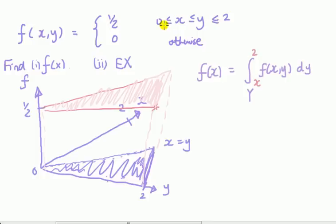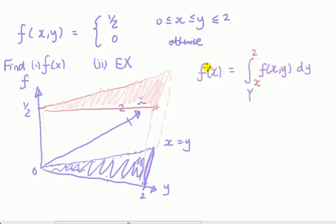If you make the mistake of putting 0 as the lower limit, you'll just get a number that doesn't depend on x, which tells you something went wrong. Although for a uniform distribution it would just be a number — so bear that in mind.